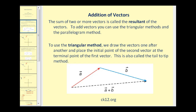The sum of two or more vectors is called the resultant of the vectors. To add vectors, you can use the triangular method and the parallelogram method. To use the triangular method, we draw the vectors one after another and place the initial point of the second vector at the terminal point of the first vector. This is also called the tail-to-tip method.